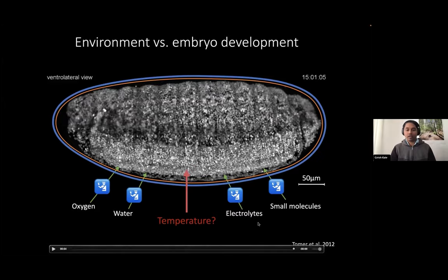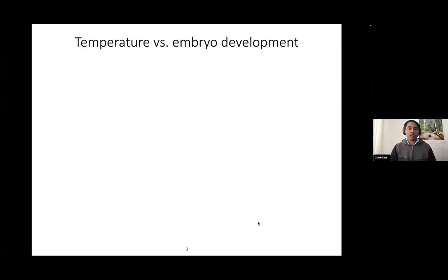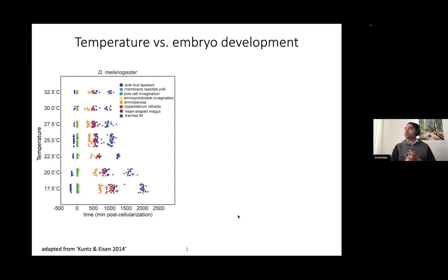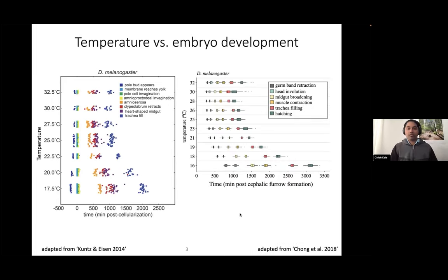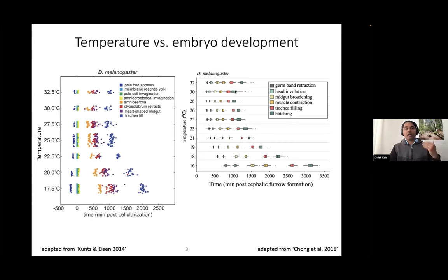How does temperature affect embryo development? I'm not the first person to ask this question. What people have done in the past is put embryos at different temperatures, and they have seen that as the temperature increases, embryo development gets faster and faster. What we see is that this increase in speed of development is not indefinite. For Drosophila embryos, that ramping up happens until 28 degrees, and then afterward embryo development actually slows down. If we think of the Arrhenius equation, we would expect development to keep going faster, but that doesn't happen. There is a weird transition between 28 and 30 degrees where things are getting interesting.